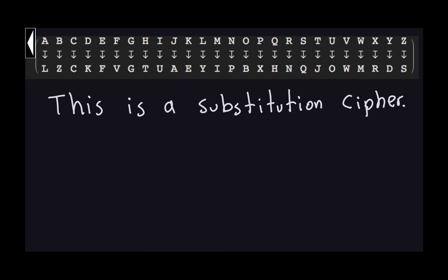Here is the complete substitution cipher. As you can see, A was transformed into L, B into Z, C into Z — any assignment is valid. The letters at the bottom are not repeated; that's the important part. The second row is basically the same alphabet rearranged in some other way. This whole setup is what we call a substitution cipher matrix, and it gives us the rule to transform plain text into cipher text.